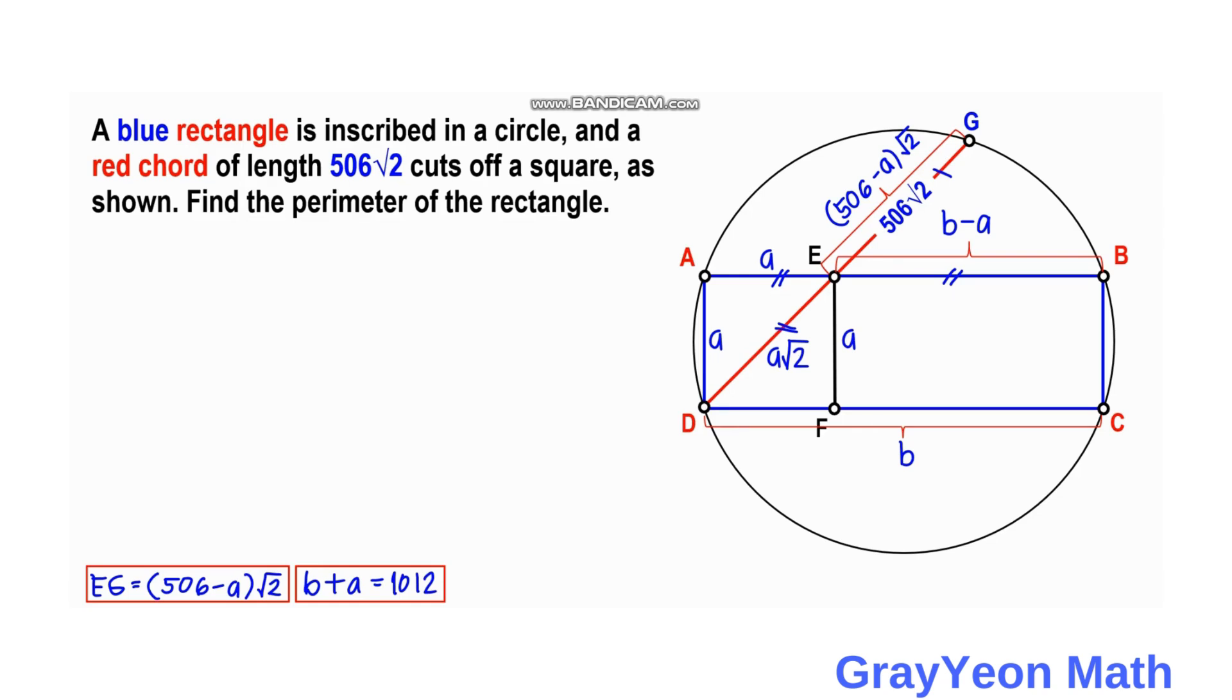Now for the final step. We are now ready to find the perimeter of the rectangle. In any rectangle the perimeter is 2 times the length plus 2 times the width. In our case the length is b and the width is a. So we can factor out the 2. So P is equal to 2 times (b plus a).